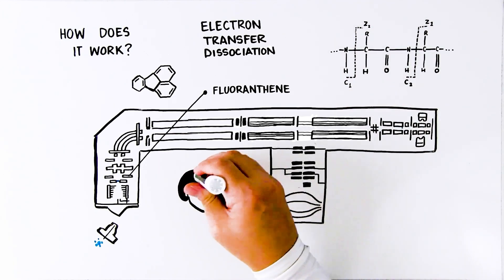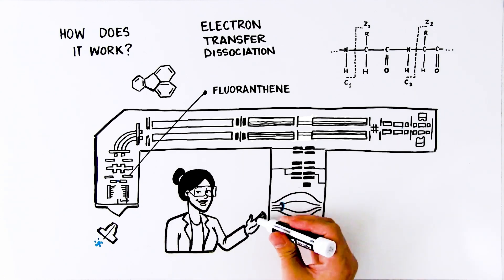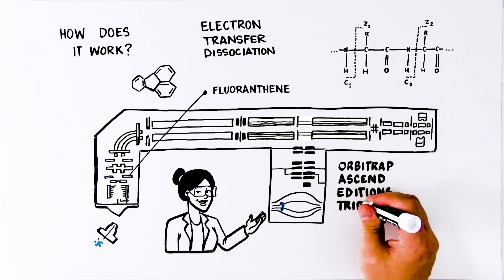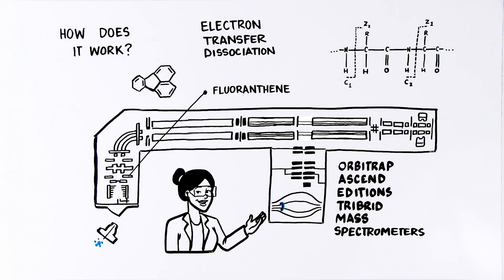This makes ETD especially effective for characterizing labile modifications on proteins like those found in glycopeptides and other complex biological samples.